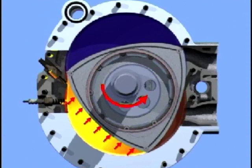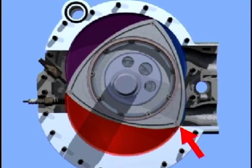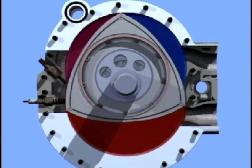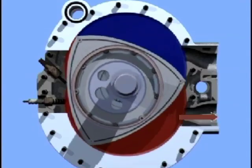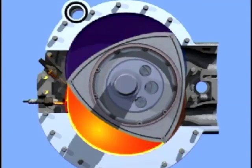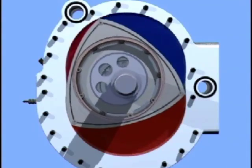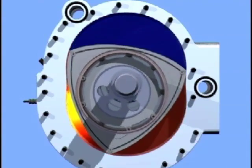This forces the eccentric shaft to rotate. This rotation of the shaft is then the driving power of the motor. Then comes the fourth stroke, the exhaust stroke. As the tip of the rotor passes the exhaust port, it opens the combustion chamber, allowing the exhaust gases to escape. The combustion chamber is reduced in size due to the shape of the housing and the movement of the rotor, forcing the exhaust gases to be expelled.